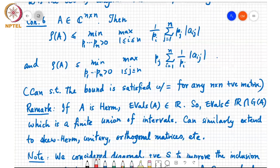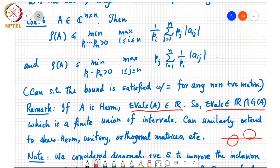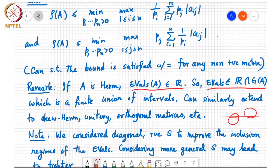So far we've been discussing arbitrary matrices. But if A is Hermitian, its eigenvalues are real-valued, so we can specialize the Gershgorin theorem: the eigenvalues belong to the real line intersected with the union of Gershgorin disks. This yields a finite union of intervals. You can similarly derive tighter bounds when the matrix has additional structure like skew-Hermitian, unitary, or orthogonal.